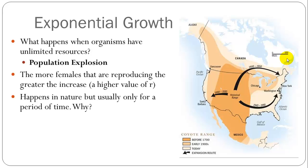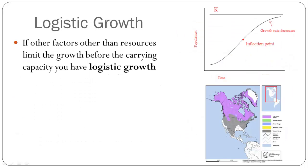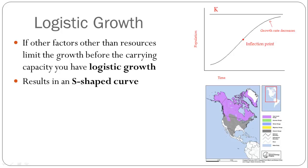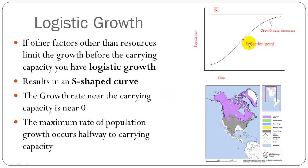In nature, this population explosion is usually only for a period of time, because eventually these resources are no longer unlimited. There is a limit to how much prey and how much land is available. This limit of resources is also known as the carrying capacity, abbreviated as capital K. If other factors limit growth before the carrying capacity, you have what's called logistic growth, which is an S-shaped curve. Exponential growth is more J-shaped. The growth rate near the carrying capacity is zero — approaching equilibrium. The maximum rate of population growth occurs halfway to carrying capacity, at the inflection point.